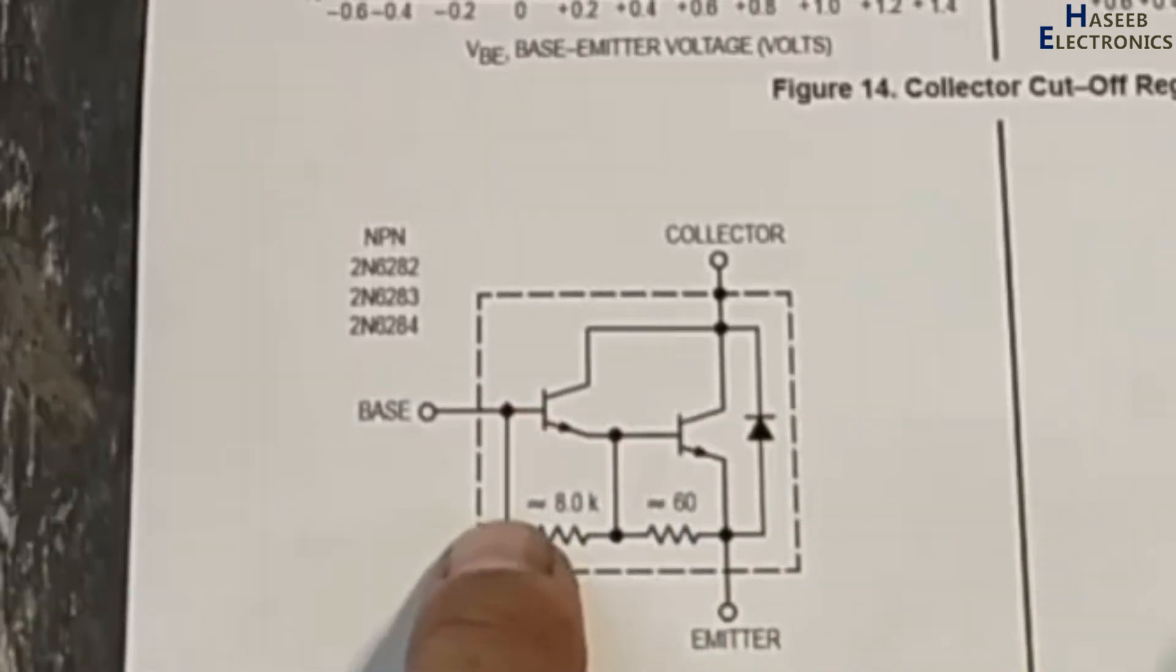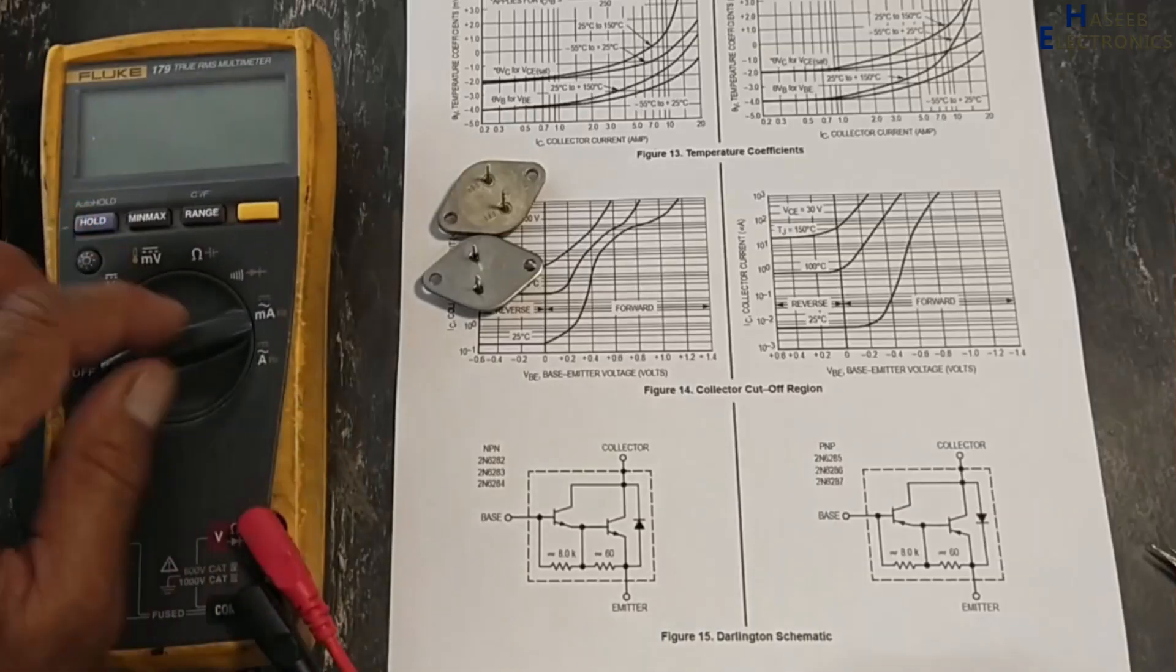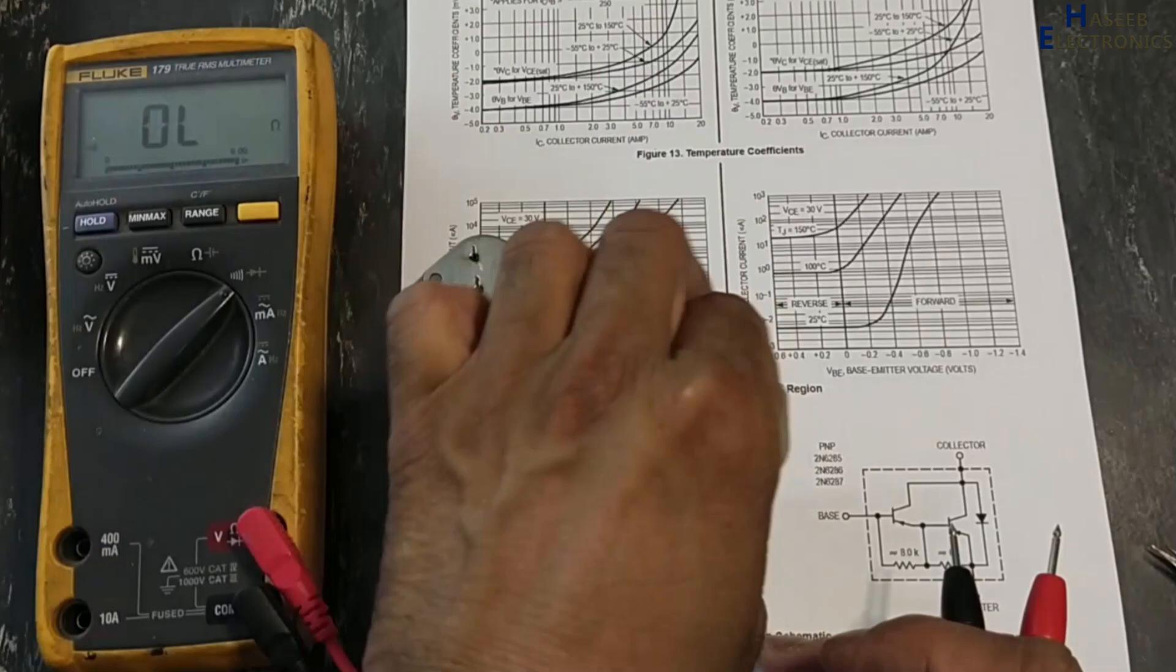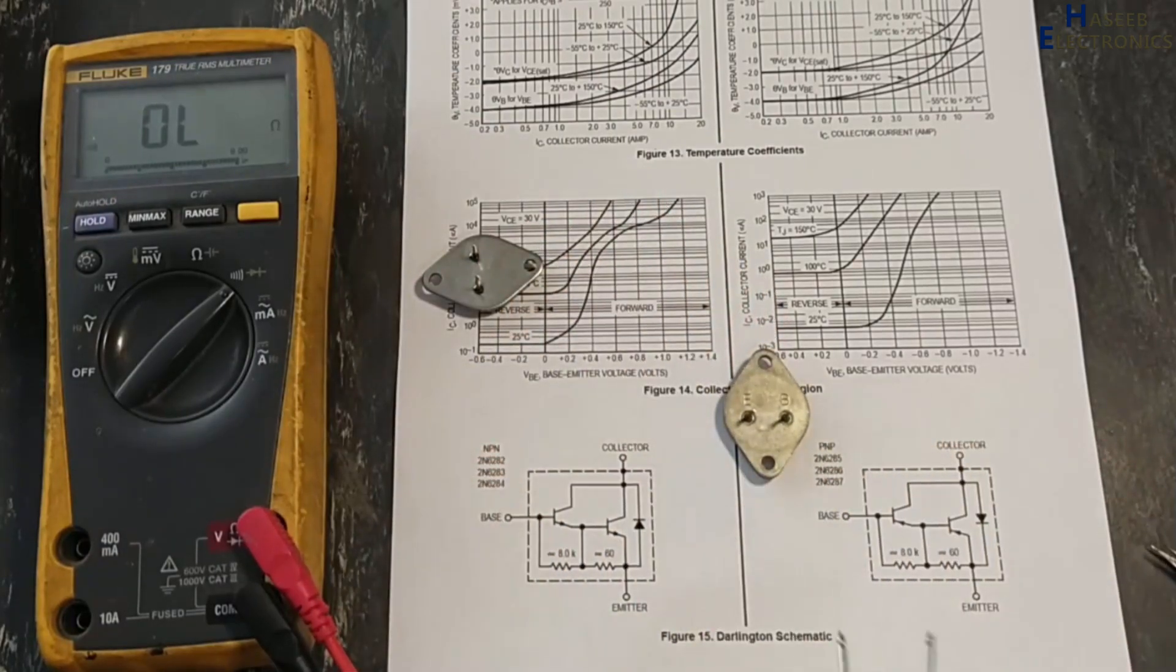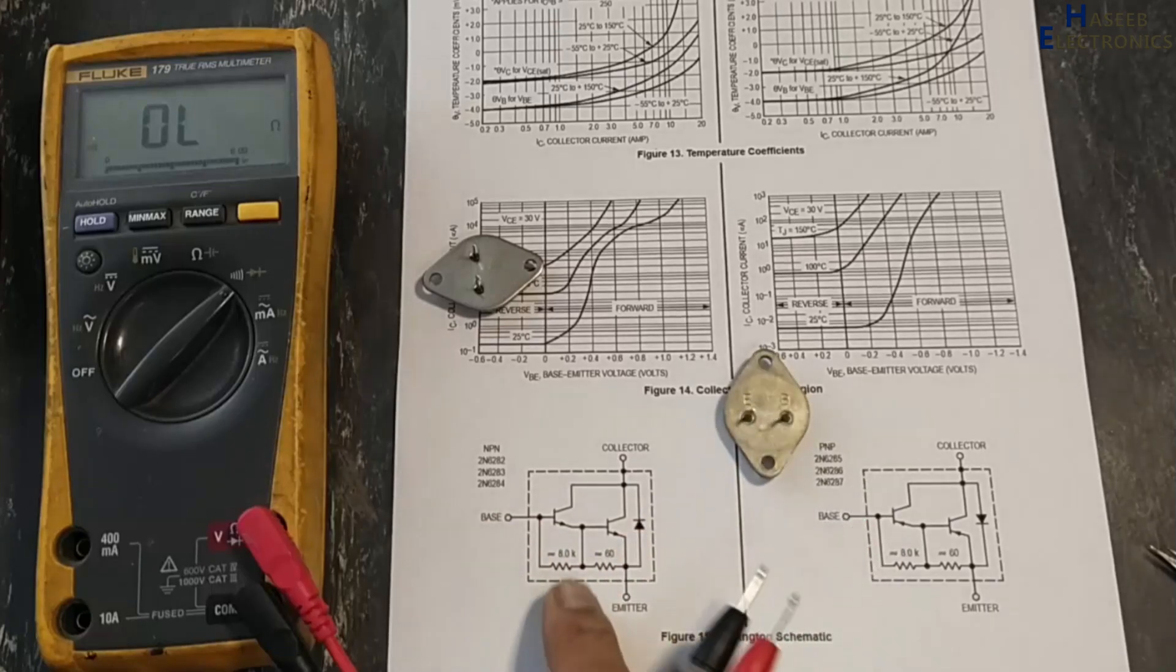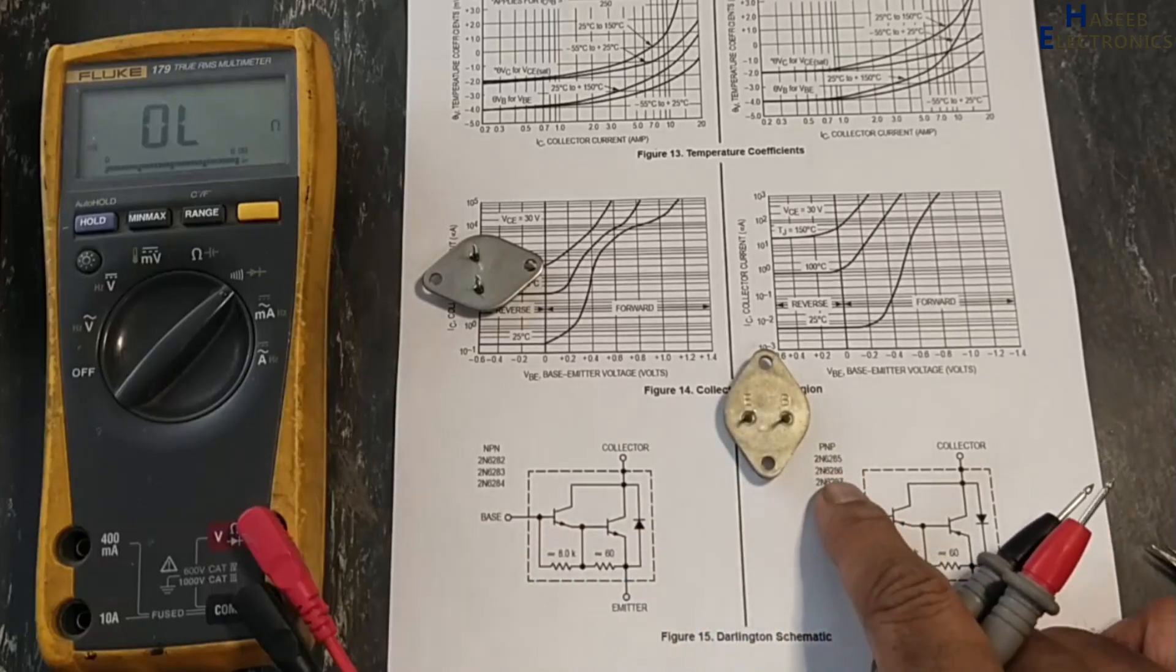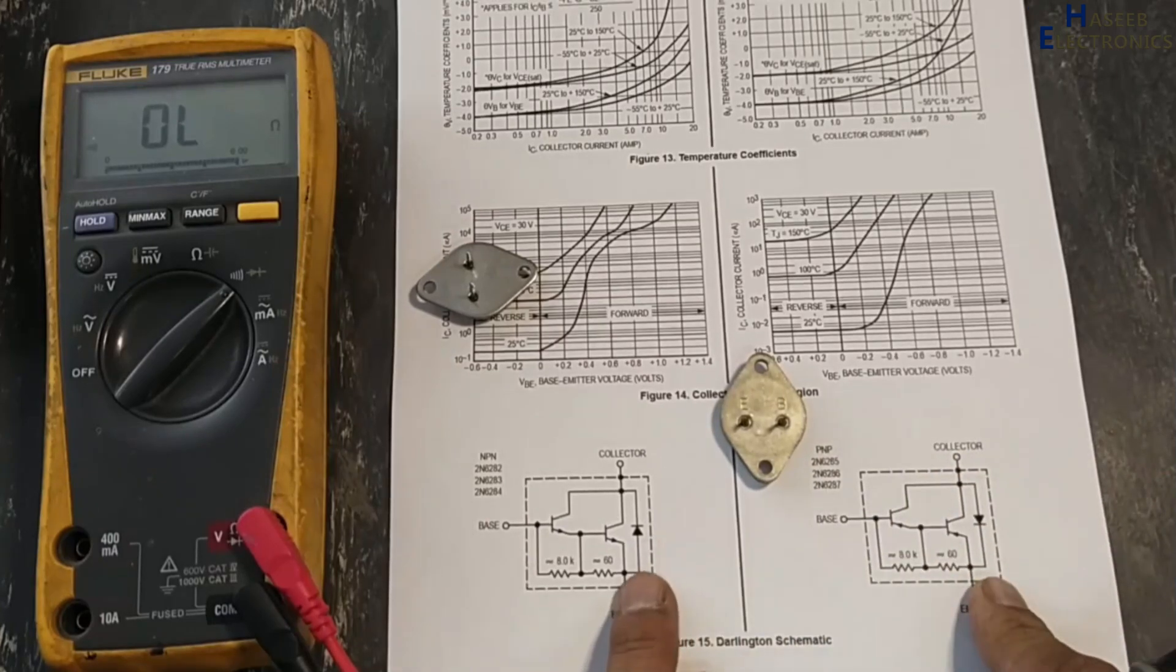Set multimeter to diode. First we will check good transistor. Base at the right side. It is NPN transistor. 2N6282, 2N6283, 2N6284, this configuration NPN transistors. 6285, 6286, 6287 this configuration. Here parasitic diode or body diode in this direction and here in this direction.